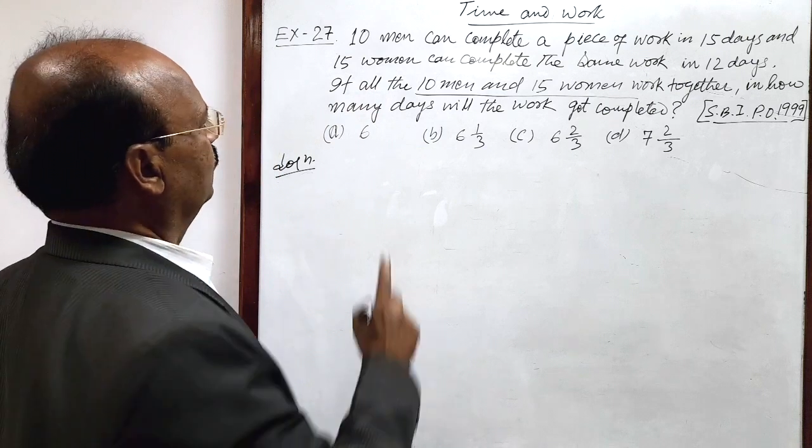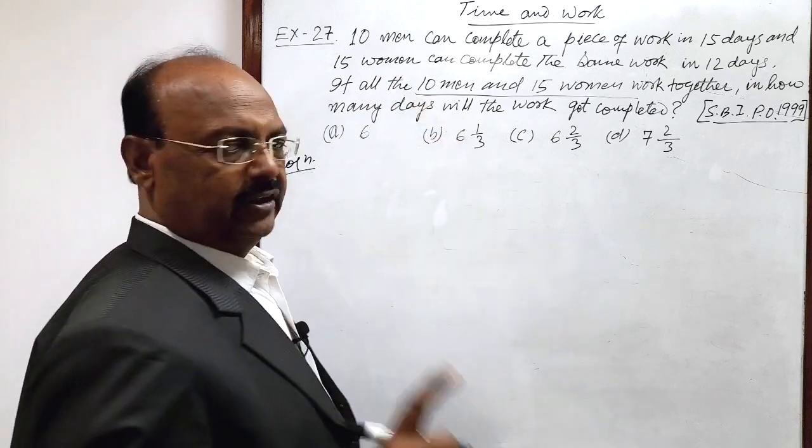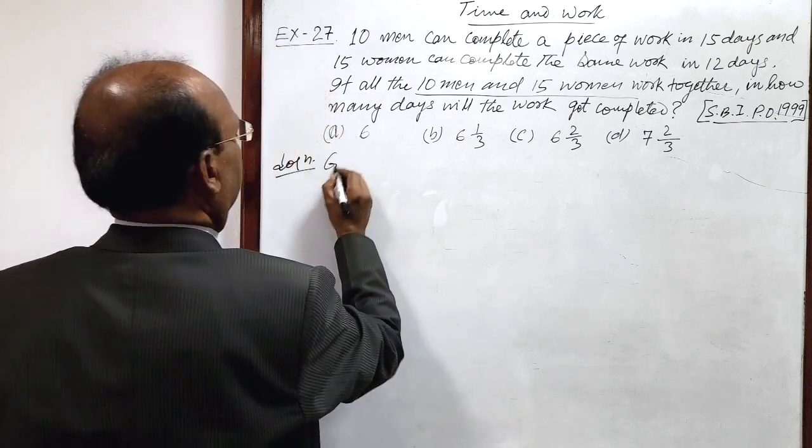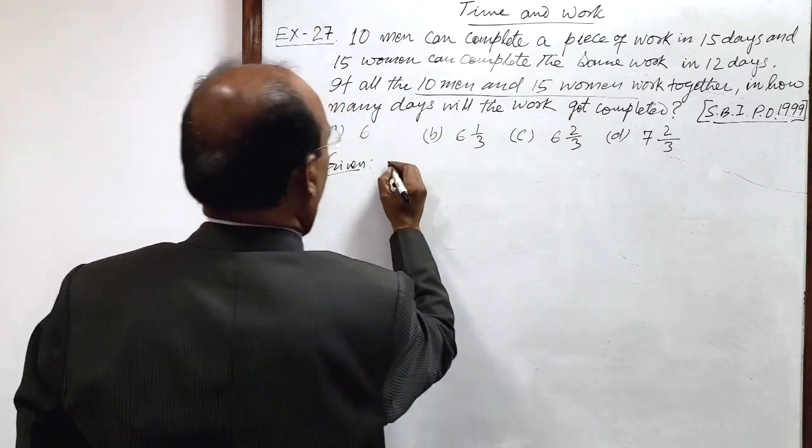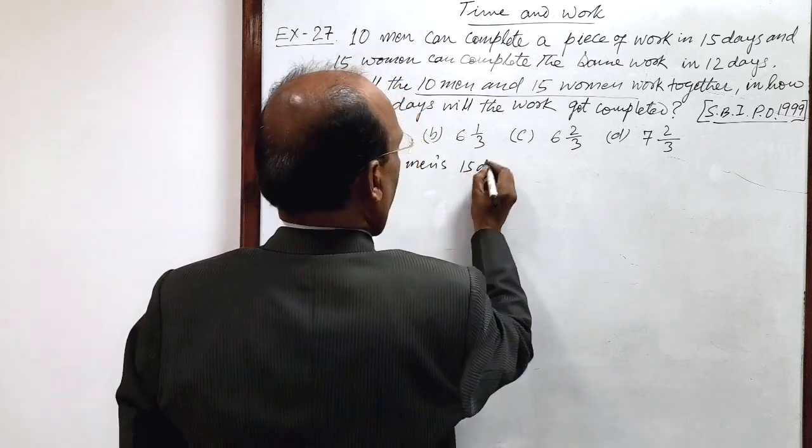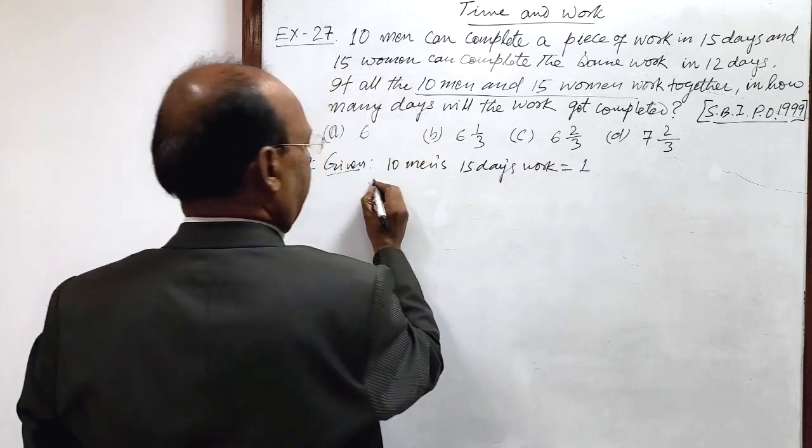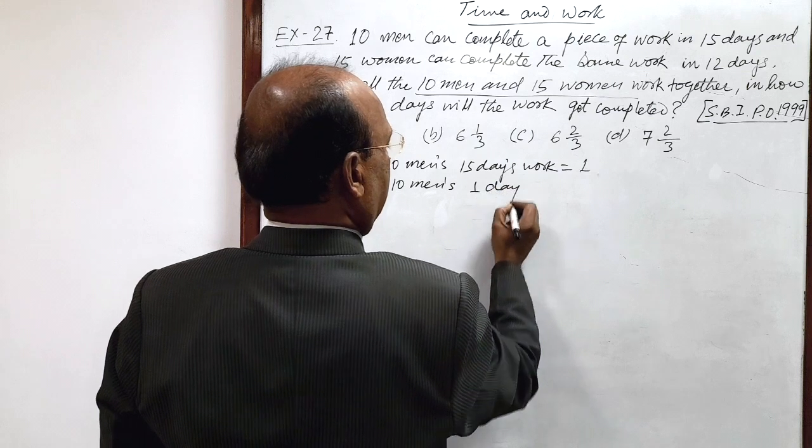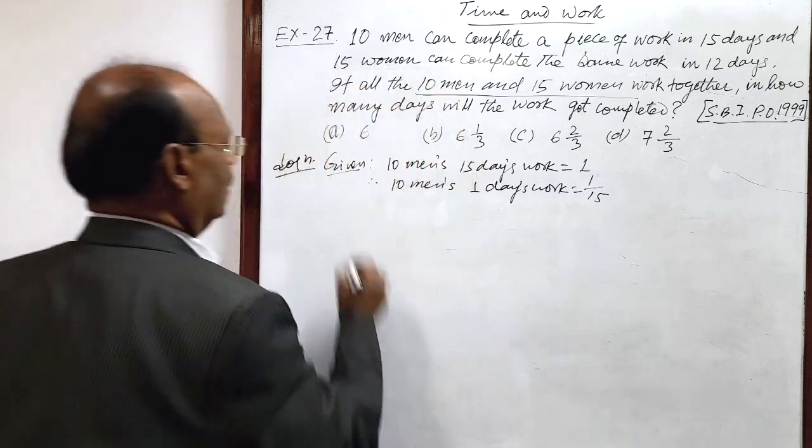Here, what we have to find out? First, 10 men and 15 women working together and what is the amount of work done in one day? So here given, this is given that 10 men's 15 days work is equal to 1. Therefore, 10 men's 1 day's work by unitary method, this is 1 by 15.